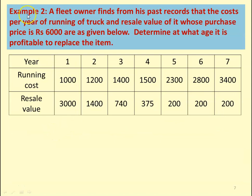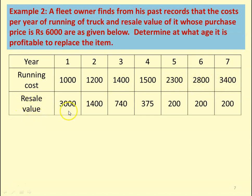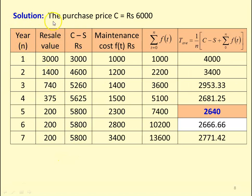We take another example — Example 2. A fleet owner finds from his past records that the cost per year of running a truck, whose purchase price is ₹6000, and its resale value are given. Determine at what age it is profitable to replace the item. Years 1 to 7, running cost: 1000, 1200, 1400, 1500, 2300, 2800, 3400. Resale value (decreasing): 3000, 1400, 740, 375, 200, 200, 200.